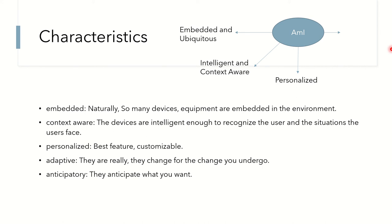The next characteristic is personalization. Your Google Assistant is personalized to you, and mine is personalized to me. The suggestions from ambient intelligence systems are highly personalized — if I like cricket-related details I'll get cricket updates, and if you like medicine-related details you'll get medicine details.